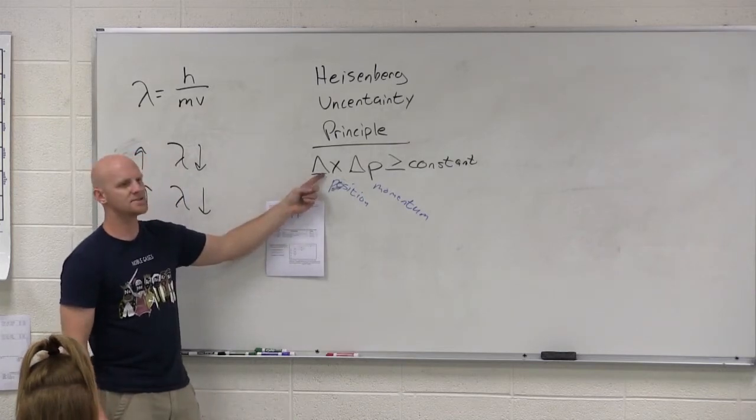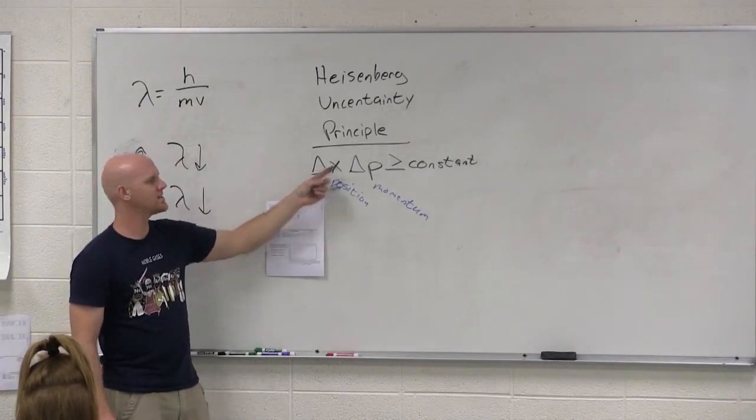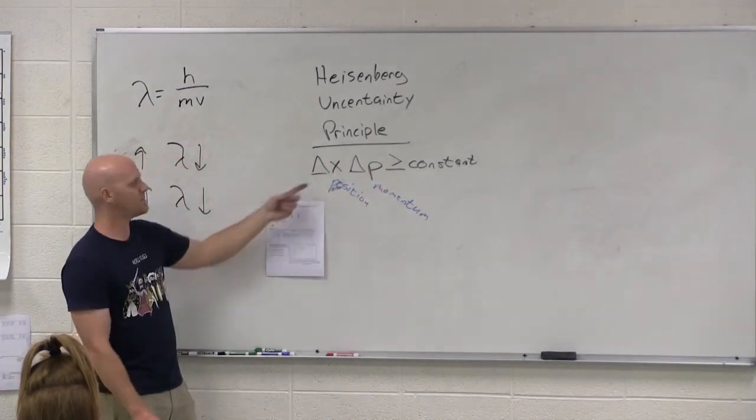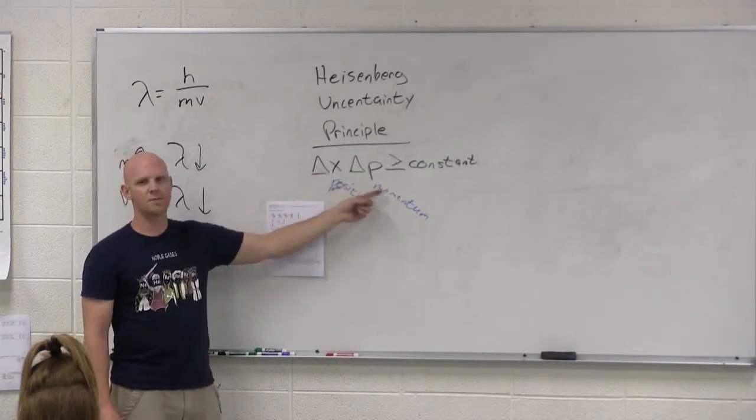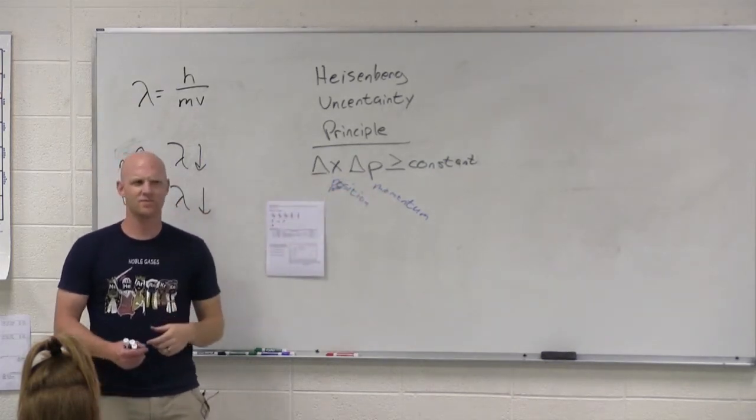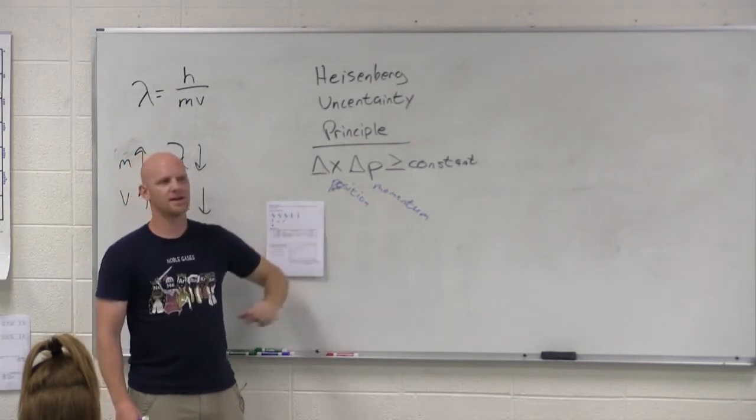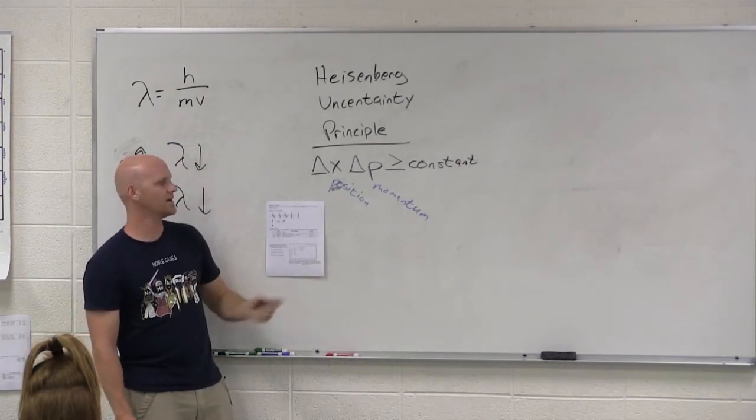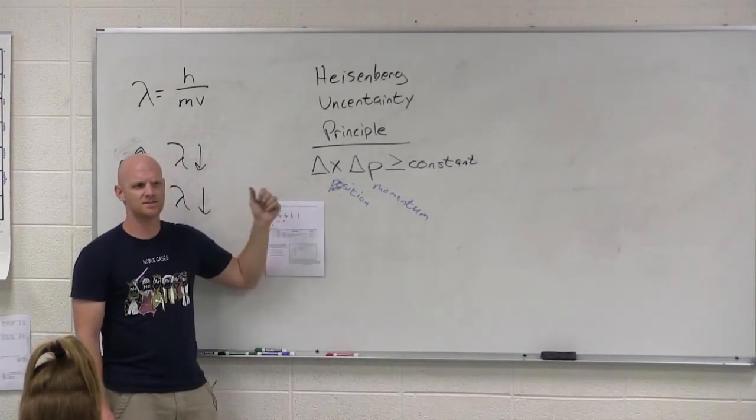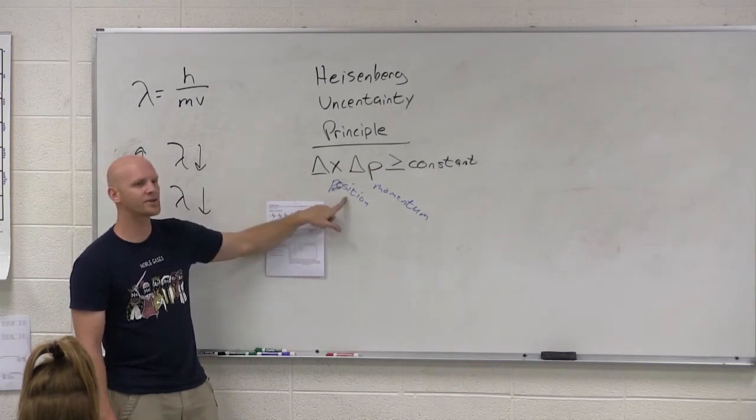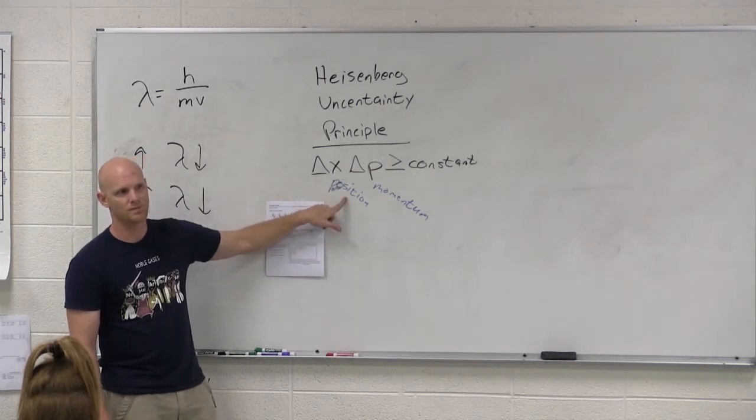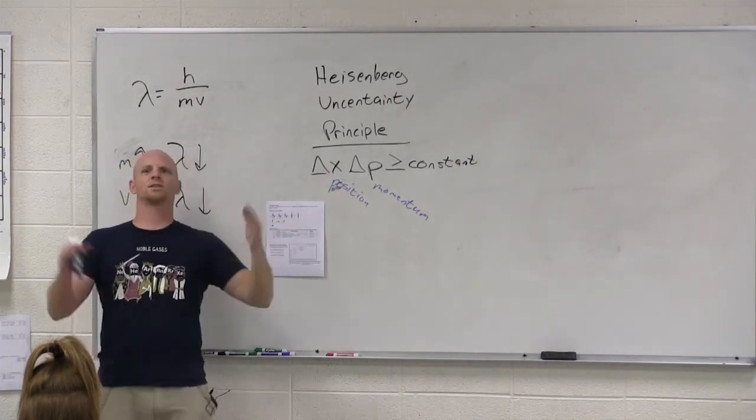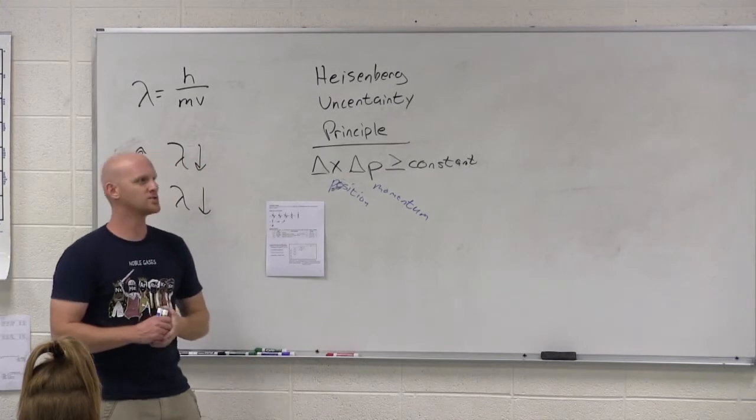So let's say you minimize the uncertainty in the position. What's that going to do to the uncertainty over here if it's still going to come out bigger than this constant? It's going to maximize it. And so it turns out the better you know the position, the less you know the momentum. The better you know the momentum, the less you know the position. This is kind of weird. Momentum is related to mass and velocity. So it's kind of dealing with where an object is going. Whereas position is kind of where an object is. And so it turns out if we try and look at where an electron is in an atom, the more we know where it is, the less we know where it's going. The more I know where it's going, the less I know where it is. It's a weird conundrum. And it's totally true. Good times, right?